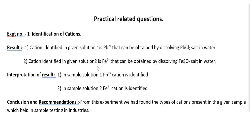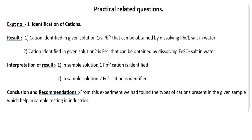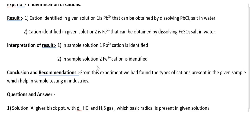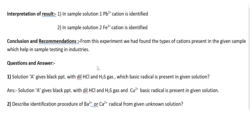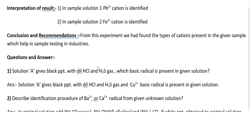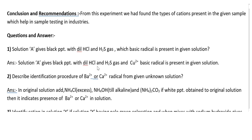Interpretation of result: In sample solution 1, Pb²⁺ cation is identified, while in sample solution 2, Fe²⁺ cation is identified. Conclusion and recommendation: From this experiment, we have found the type of cations present in the given sample, which helps in sample testing in industry. Now for question and answer: Solution A gives black PPT with dilute HCl and H₂S gas — which basic radical is present?